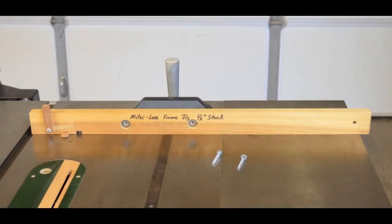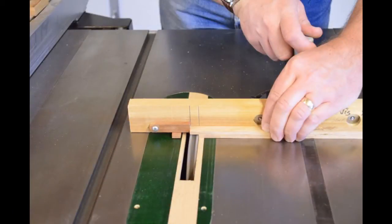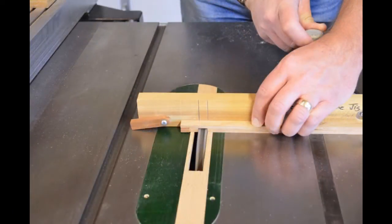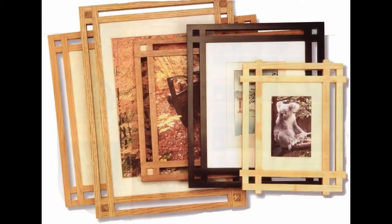I'll show you how to make a simple jig to cut these double half-laps. And because everything is referenced off the end of your parts, different sized frames are simply a matter of changing the length of your parts. The jig setup is the same for every size.